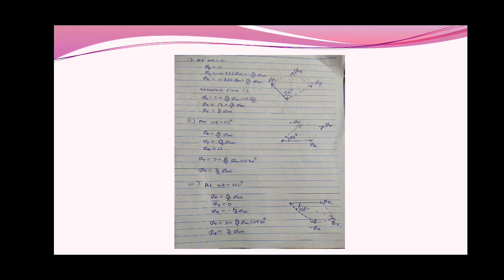At ωt = 60 degrees, putting this value into the three equations: φr = √3/2 φm, φy = −√3/2 φm, and φb = 0. The resultant of φr and φy is: φresultant = 2 × (√3/2 φm) × cos(30°) = 3/2 φm. The phasor diagram is shown — φr is positive so it is drawn as is, but φy is negative so it is drawn in the opposite direction as a dotted line. The resultant is also shown.